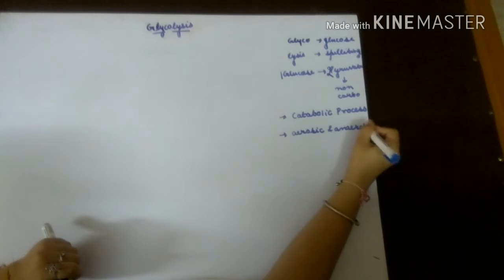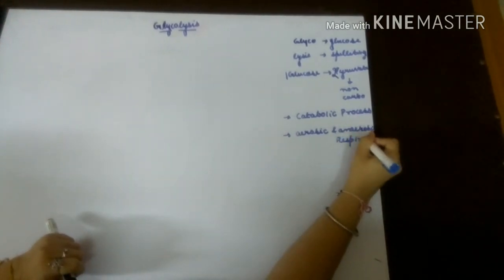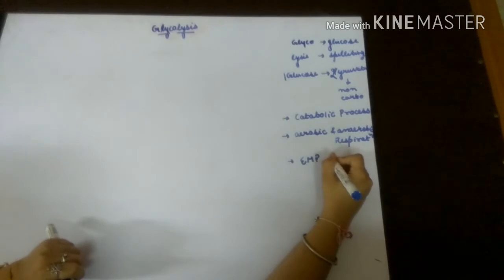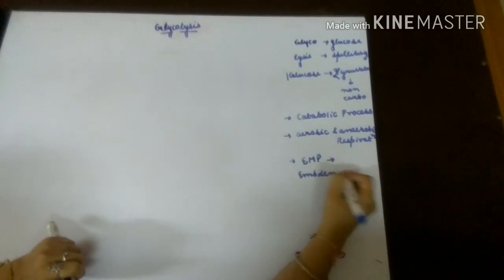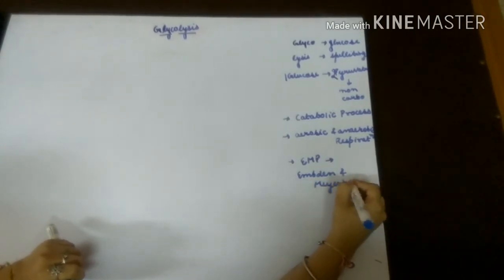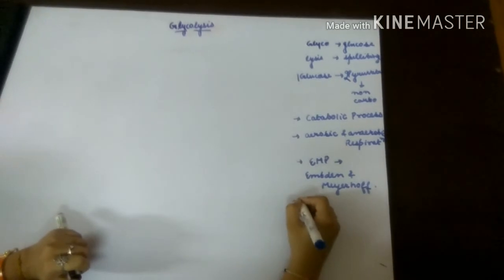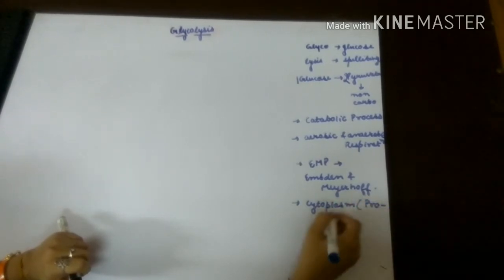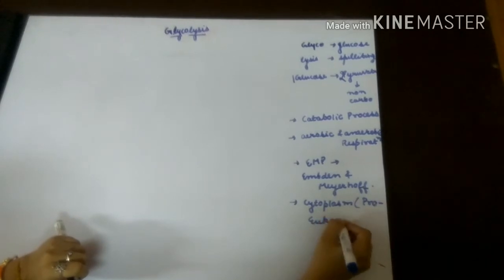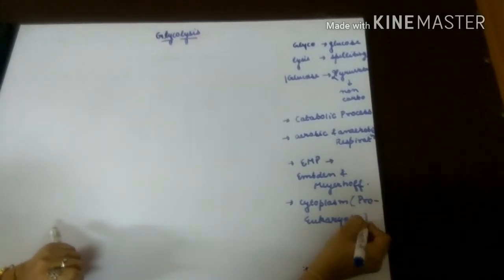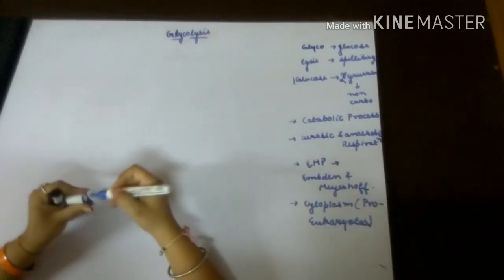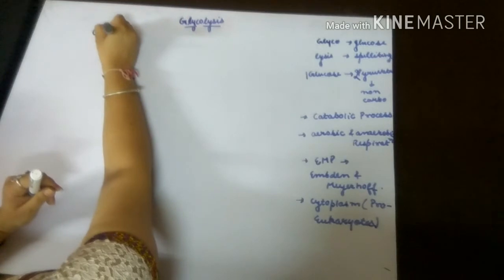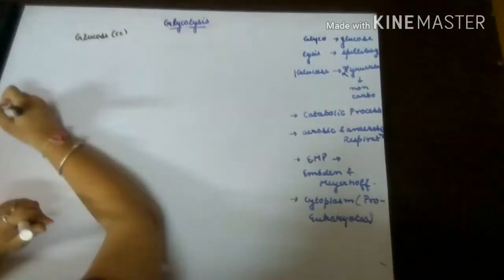Glycolysis is a pathway which takes place both in aerobic as well as anaerobic respiration. It is also called the EMP pathway, given by the two scientists Embden and Meyerhof. It takes place in the cytoplasm of both prokaryotes as well as eukaryotes. Prokaryotes include bacterial cells, and eukaryotes include both plant and animal cells.